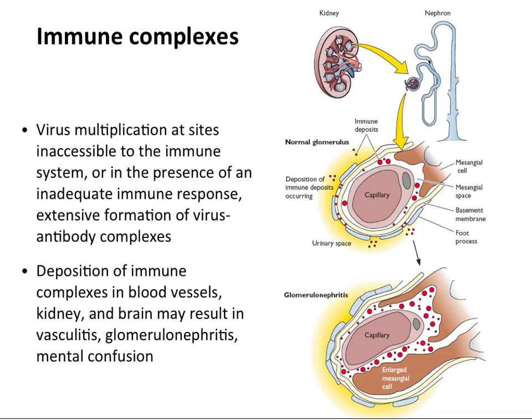In the kidney, the glomeruli normally filter toxins from the blood. If antibody-antigen complexes deposit there, the mesangial cell — whose function is to remove particles from blood — extends itself, gets very big, blocks off the capillary, and filtration decreases. That's glomerulonephritis — basically an immune complex disease.